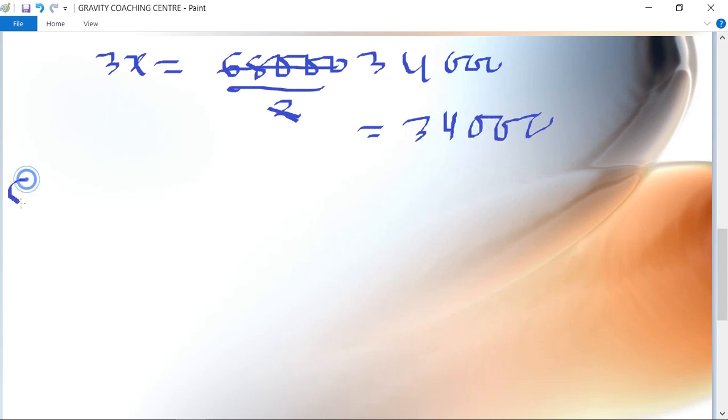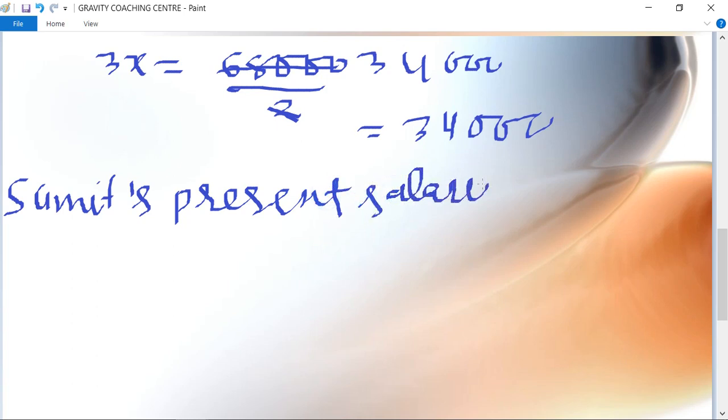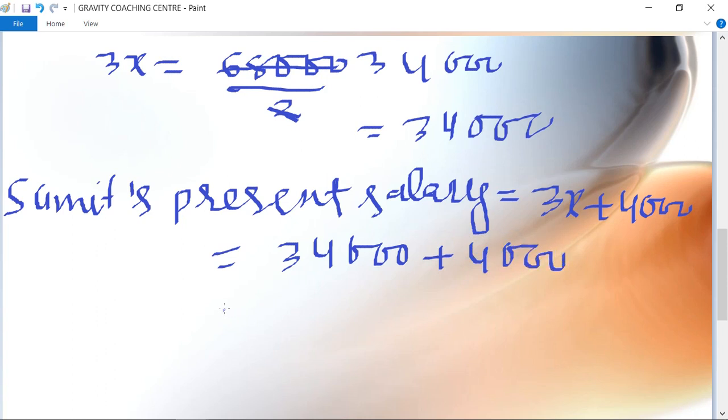Hence, Sumit's present salary equals 3x plus 4000, which equals 34,000 plus 4,000, equals 38,000, which is the required answer.